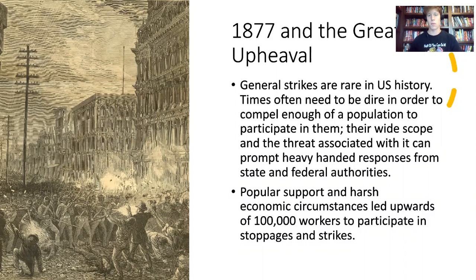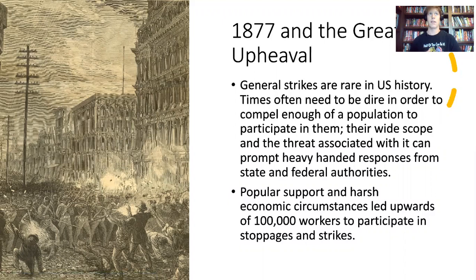In the Great Upheaval, popular support and harsh circumstances were so total that records have strike participant counts upwards of 100,000. Keep in mind this was when the U.S. population was very, very low. The last major strike that happened in the U.S. was about two years ago — the UAW's 55,000 members at GM went on strike and made national news. But even that 55,000-person strike in a country with a current population of 400 million pales in comparison to 100,000 workers across the U.S. on strike with a much smaller population — a much greater proportion of workers at that time were on strike.